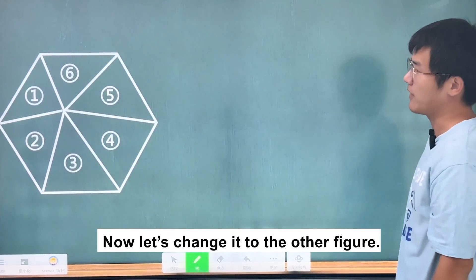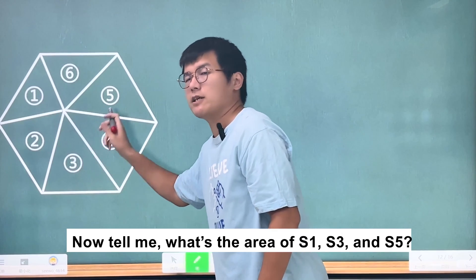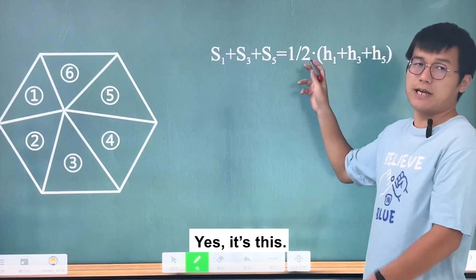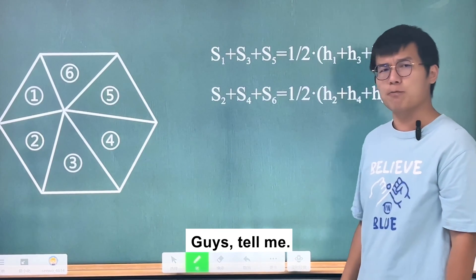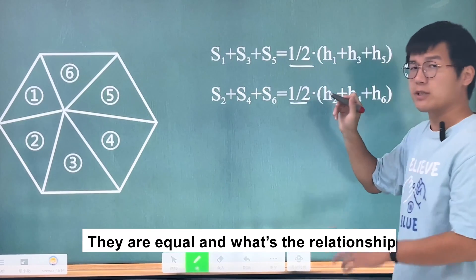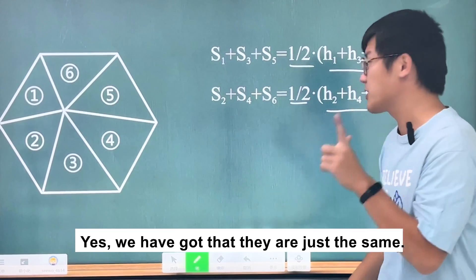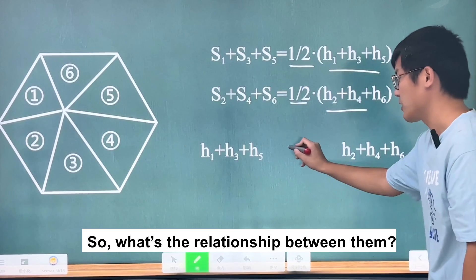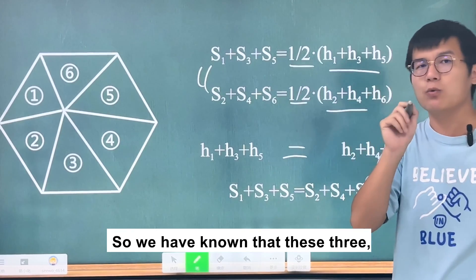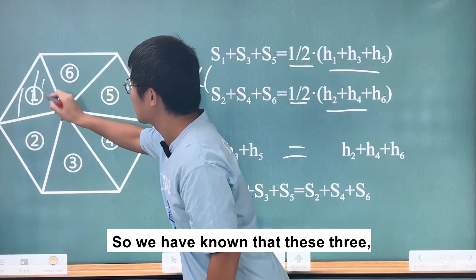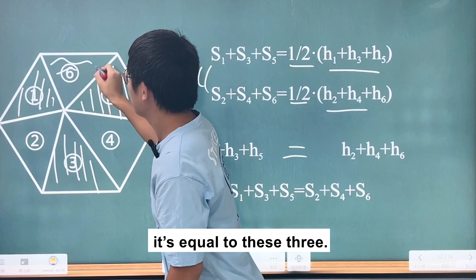Now let's convert to the area figure. What is the sum of areas S1, S3, and S5? Yes, it equals a certain value. And what about S2, S4, and S6? Yes, it equals another value. Since both sets of three heights sum to the same total height, and all bases are equal, S1 plus S3 plus S5 equals S2 plus S4 plus S6.